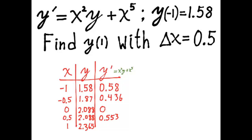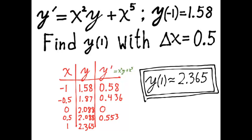I didn't write down these numbers and then type them into the calculator — I stored my partial results in the calculator. So although I'm only writing three digits here, I was actually storing more than three digits. When you're using your calculator to do this, you should definitely be storing intermediate results — it saves a lot of time and automates the process. The final answer is y of 1 is approximately equal to 2.365. And that is Euler's method.